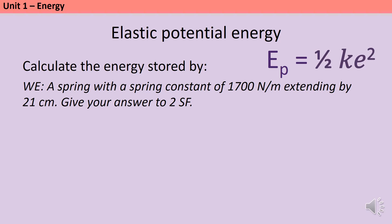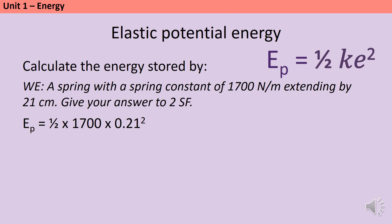Let's talk about significant figures. If the exam board wants to assess this they'll specify in the question how many to give. The general rule is you can't be more precise than the data you're working from, so use the same number of significant figures as the quantities in the question — if there's a difference, go with the smaller number. Here the data is to two significant figures and we're asked for two. Using ½ × k × e² with the extension converted to metres gives 37.485 joules, but rounded to two significant figures that's approximately 37 joules. Remember: rounding should always be the very last thing you do.